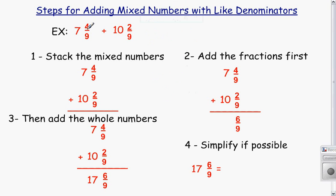Whole number 7, a fraction of 4/9. Now, here we have mixed numbers that have the same denominator. As with adding fractions or subtracting fractions, it's a little bit easier than if the denominators were different. The first thing we want to do is stack the mixed numbers.